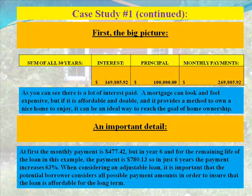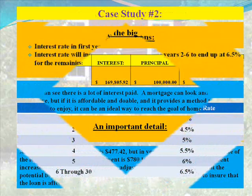An important detail: at first the monthly payment is $477.42, but in year 6 and for the remaining life of the loan in this example, the payment is $780.13. So in just 6 years, the payment increases 63%. When considering an adjustable loan, it is important that the potential borrower considers all possible payment amounts in order to ensure that the loan is affordable for the long term.